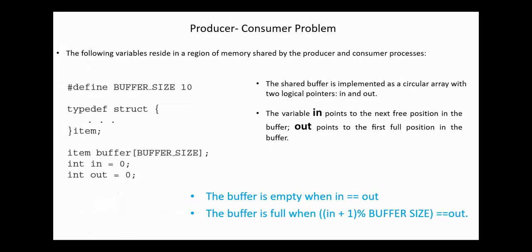Back to the bounded buffer producer-consumer problem. I will quickly review the two slides discussed in Chapter 3. The shared buffer is implemented as a circular array with two logical variables, in and out. The variable in points to the next free position in the buffer, and the variable out points to the first full position in the buffer.